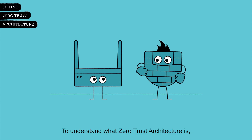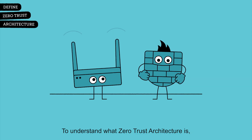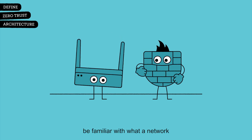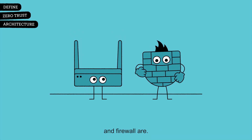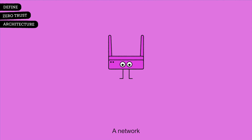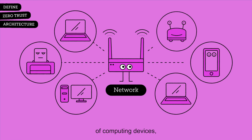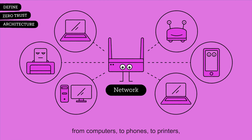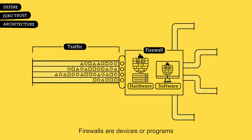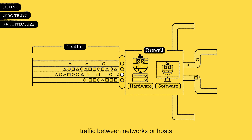To understand what Zero Trust Architecture is, it is helpful to first be familiar with what a network and firewall are. A network is the interconnection of computing devices, from computers, to phones, to printers, to smart devices and so on. Firewalls are devices or programs that regulate the flow of network traffic between networks or hosts that have different security levels.